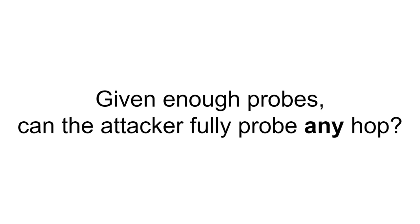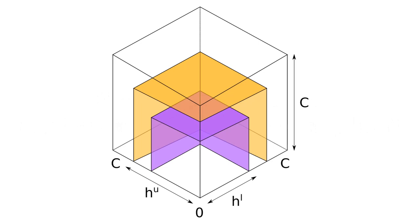and let me show you why in a three-dimensional example. Imagine now we have a hop with three channels with equal capacities equal to C, and the attacker has done some probes in one of the directions and has established the lower bound HL that corresponds to the smaller purple cube, and the upper bound HU corresponds to the larger orange cube.